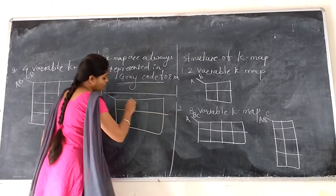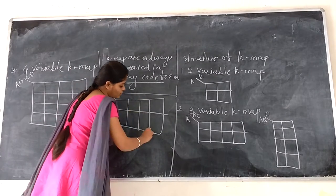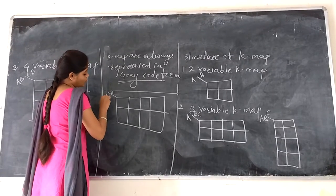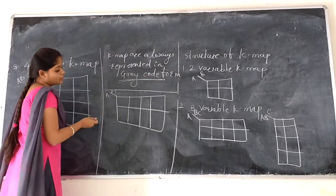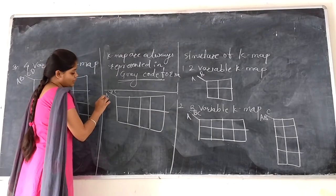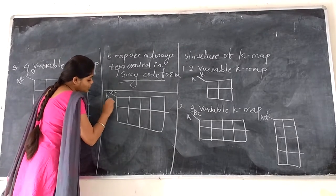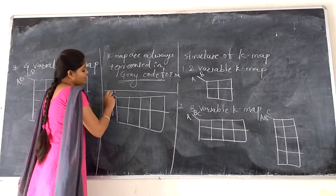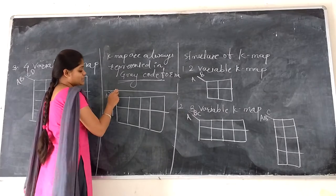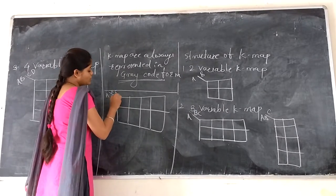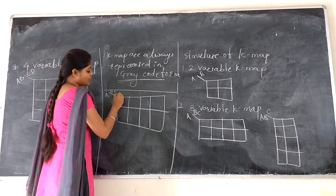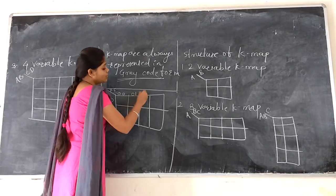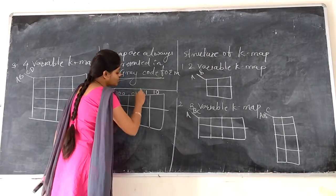How to assign values to three variable K-map. We have one variable on row and two variables on column. So for this one variable, there are two possible values, either zero or one. And similarly, these two variables having zero or one value. So as two variables are there, four possible combinations are there: 00, 01, then 11, 10.